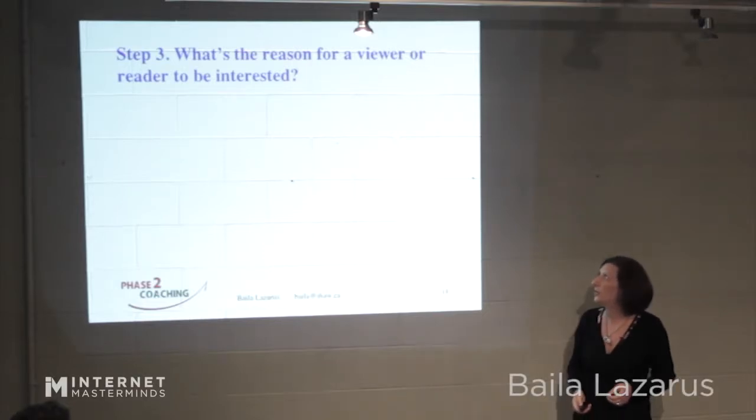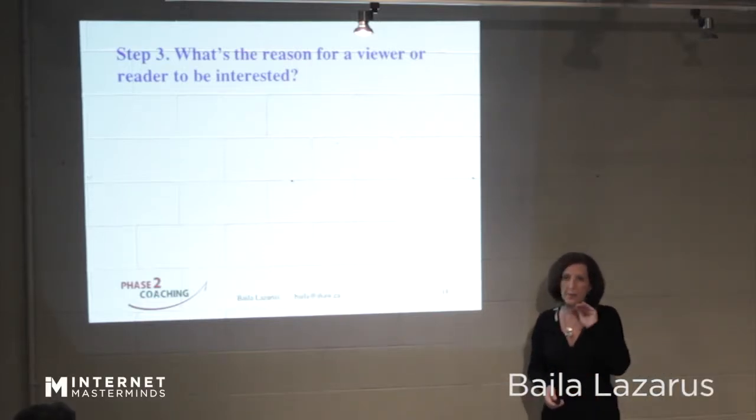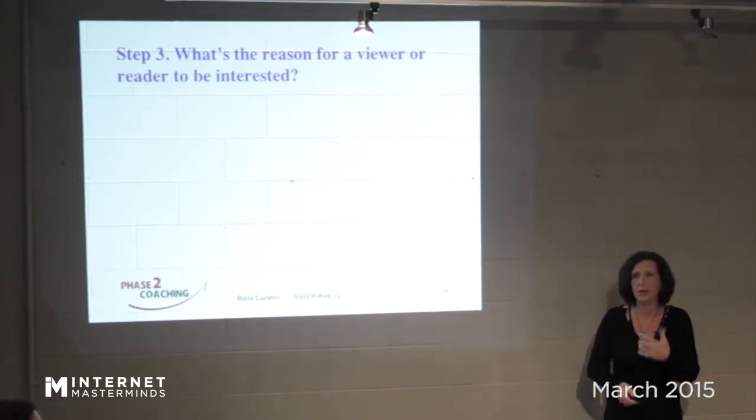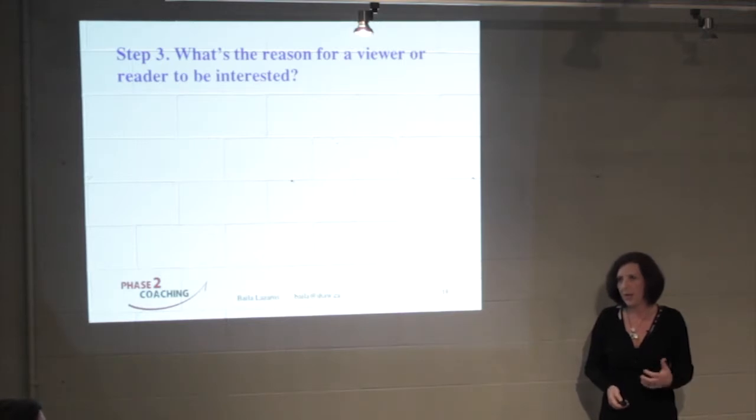Step three: what's the reason for a viewer to read or to be interested? This might be the hardest thing, and sometimes I have to be honest, I turn down stories and I couldn't even give a really good explanation other than it was a gut feeling or I just knew that the readers wouldn't be interested. But I'm going to try and give some guidelines.